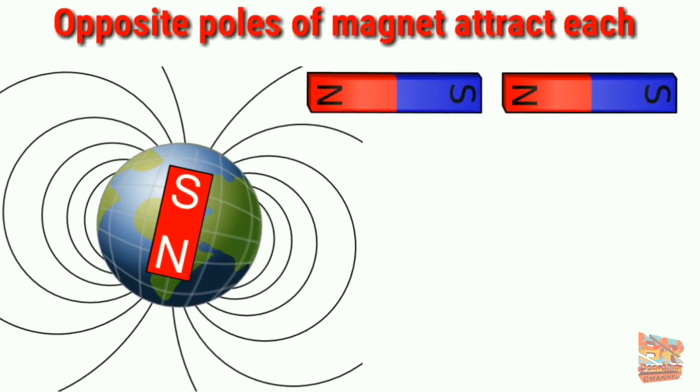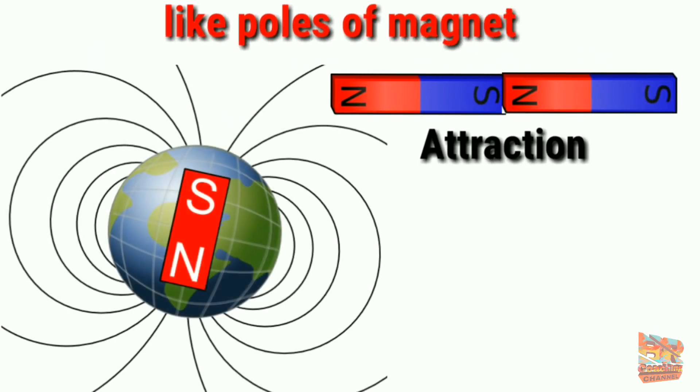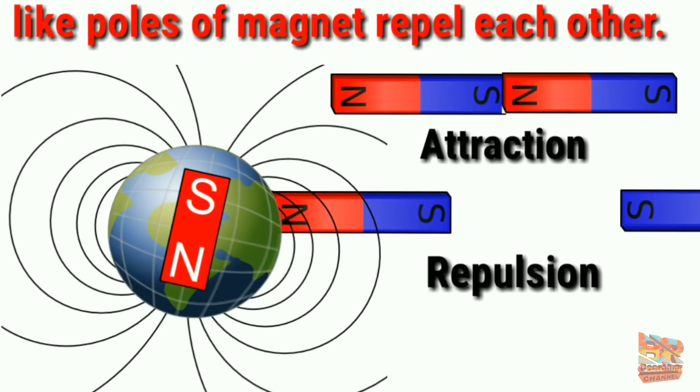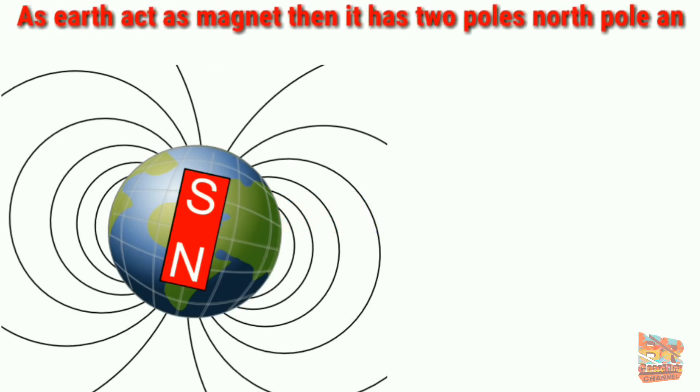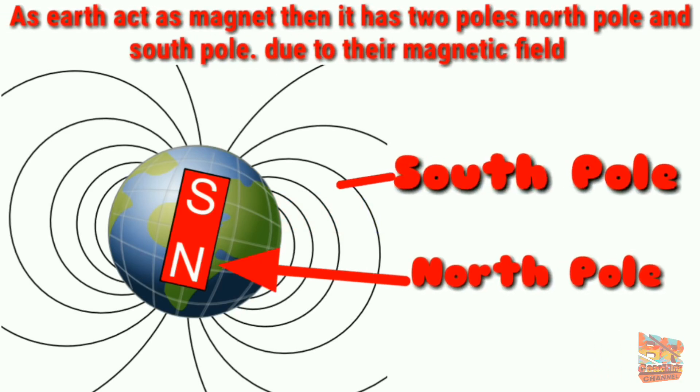As we know, opposite poles of magnets attract each other and like poles of magnets repel each other. As earth acts as a magnet, then it has two poles: north pole and south pole.